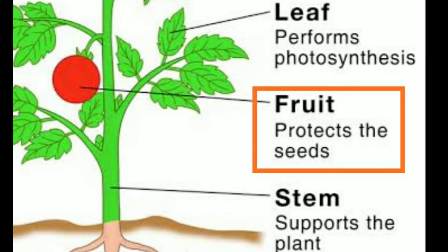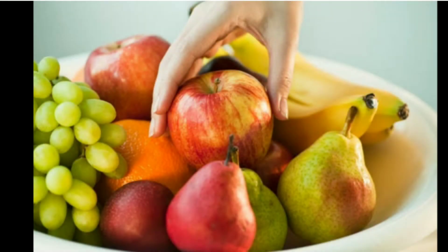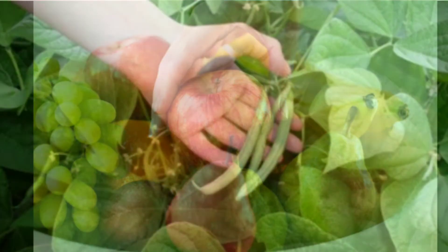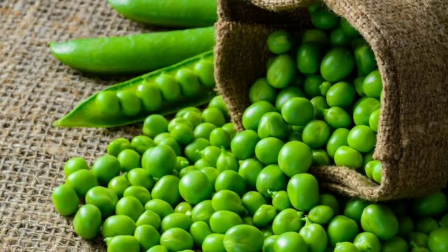Fruits have different shapes and contain one or more seeds. The pods of beans and peas are actually fruits.